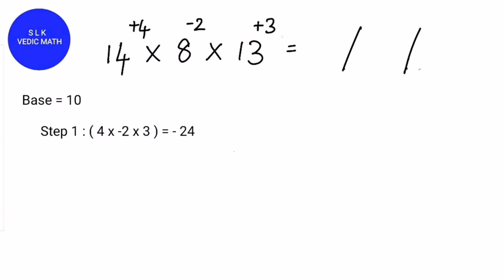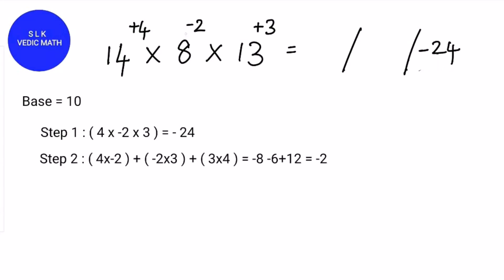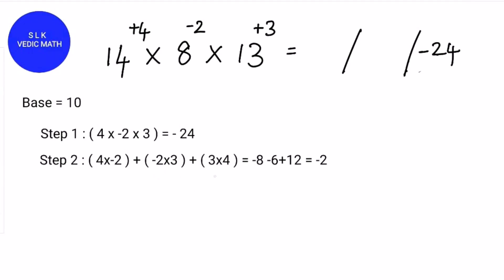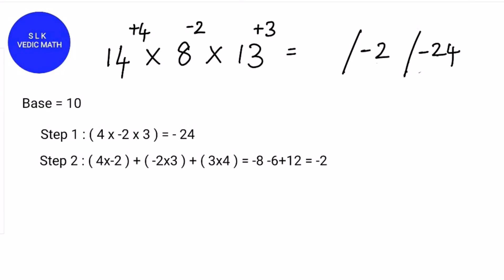First multiply the differences. So 4 × -2 × 3 which is -24. So write -24 in the last part. Now for step 2, do 4 × -2 plus -2 × 3 plus 3 × 4. 4 × -2 is -8 and -2 × 3 is -6, and 3 × 4 is 12, which gives the answer of -2. So write -2 in the middle part.